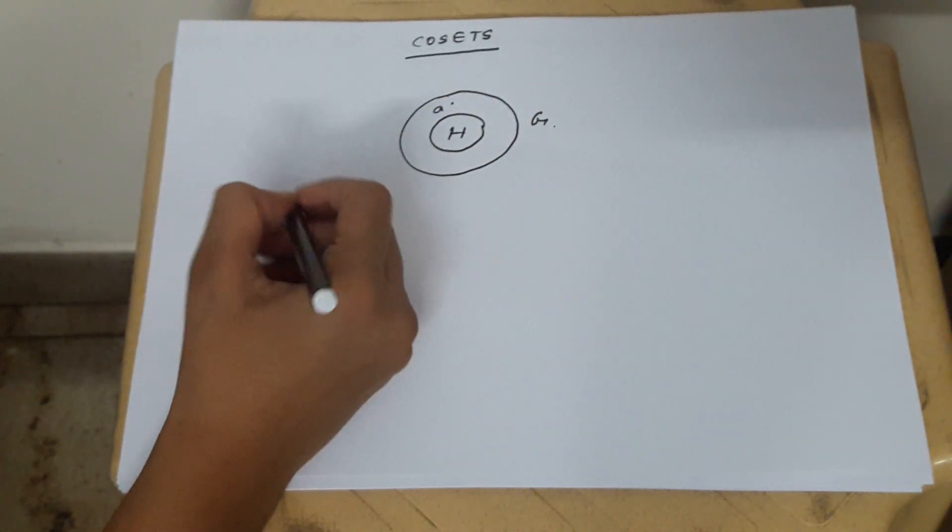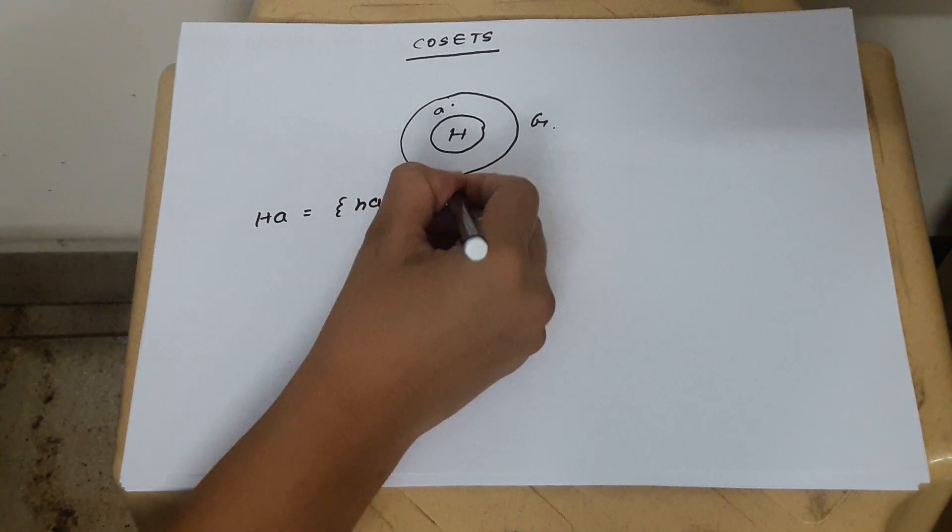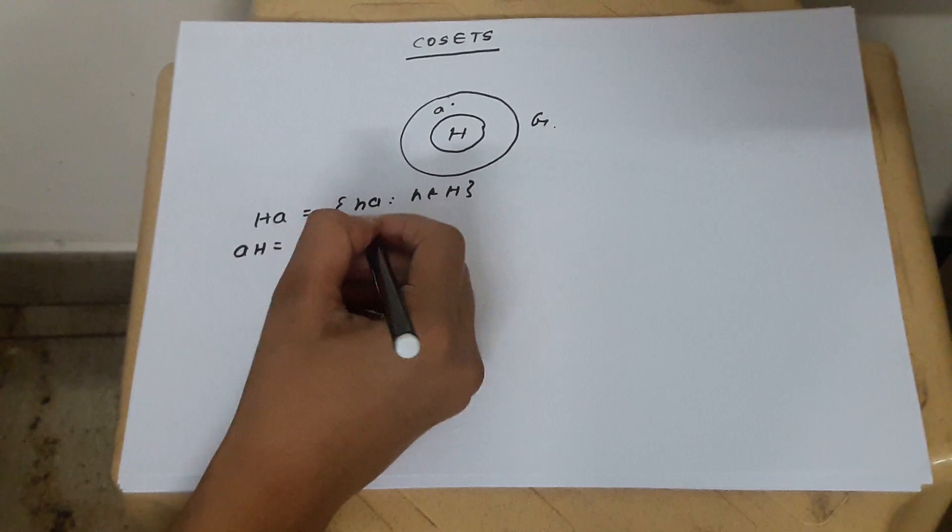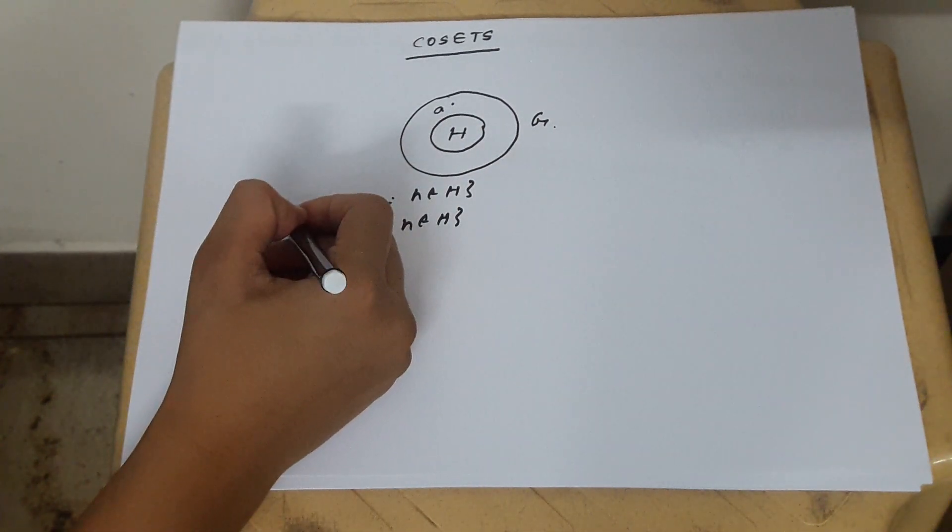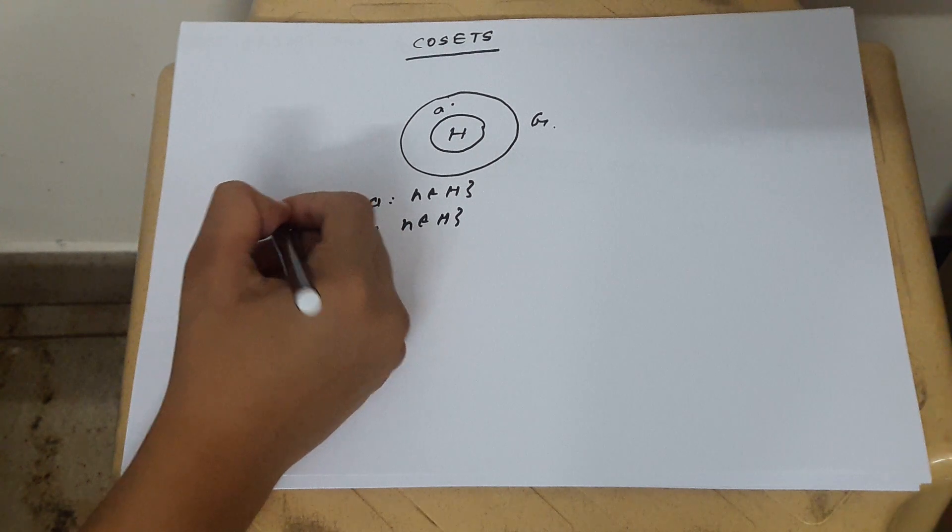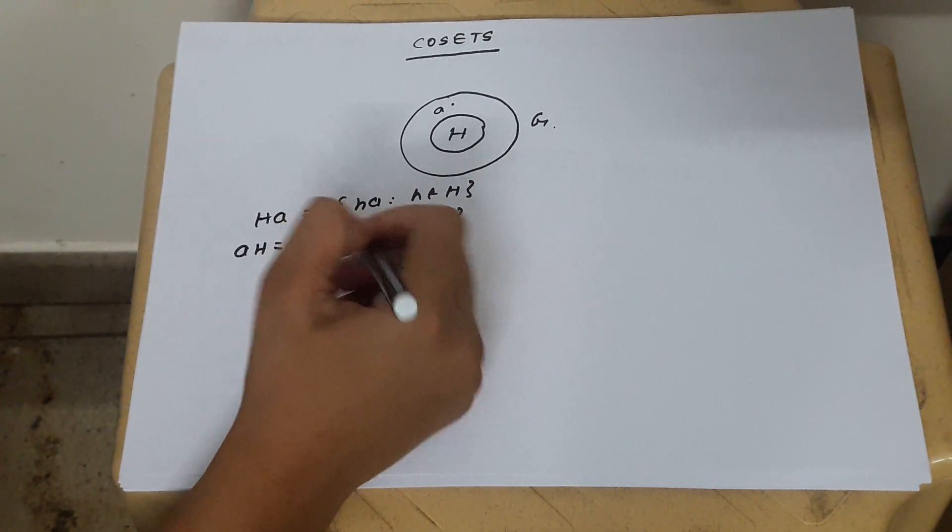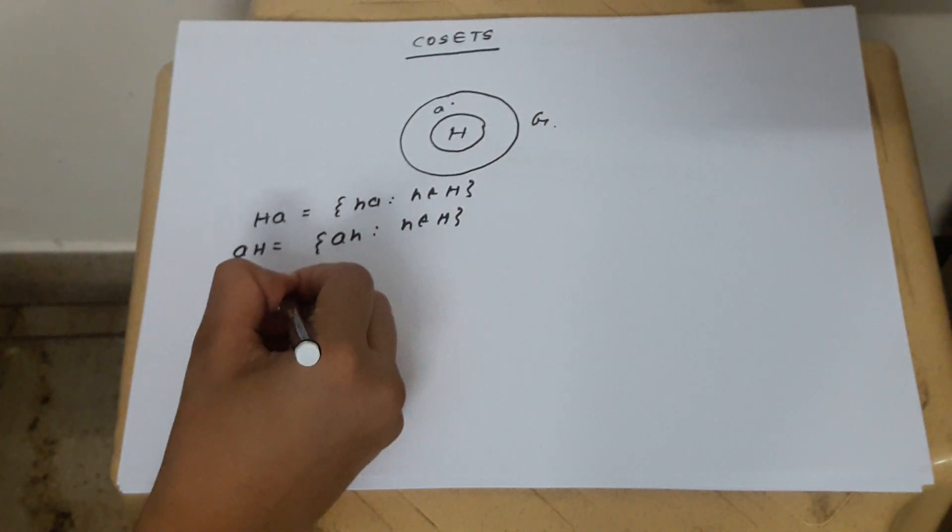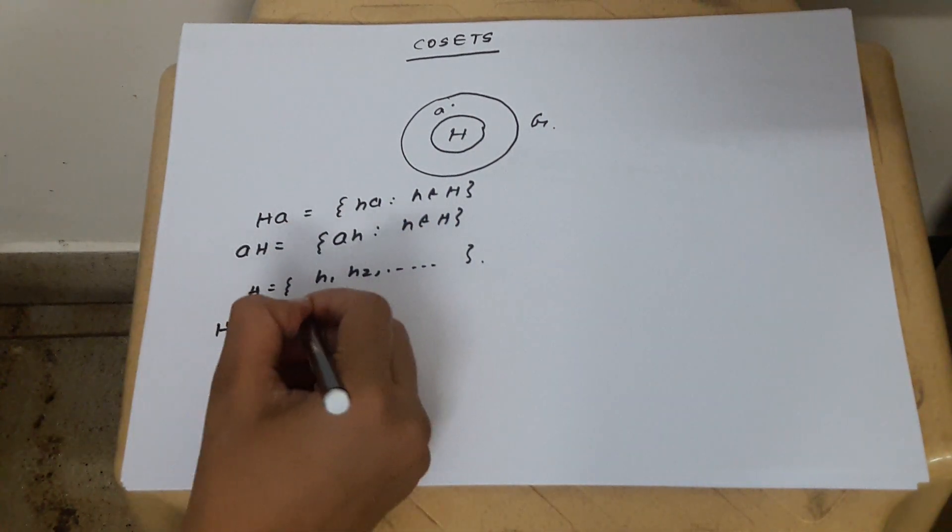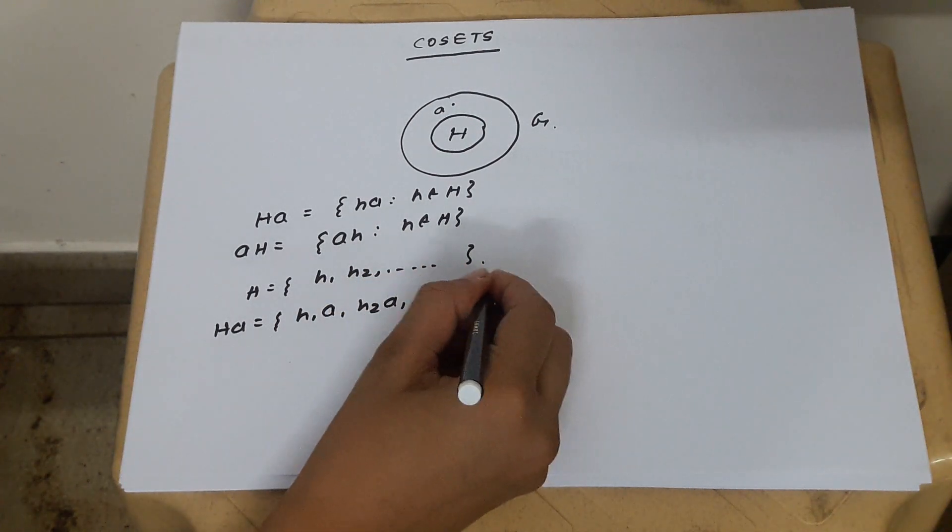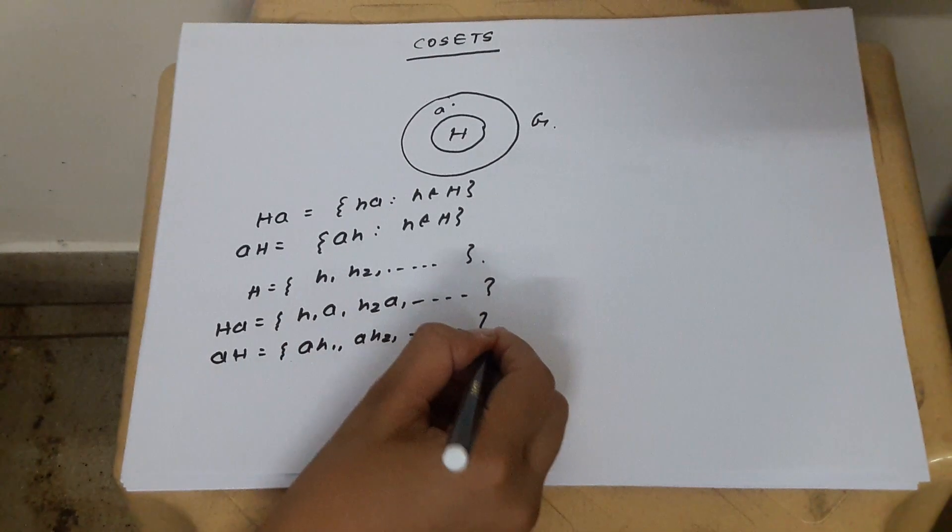See, H is a group and we define a set HA, which means elements of the type HA such that H belongs to H, and AH such that A is getting multiplied with H from left-hand side. Here, HA means element A is getting multiplied with H from right-hand side and AH means an element A is getting multiplied with H from left-hand side. Then, if you have, suppose H equals H1, H2 and so on, then HA equals H1A, H2A and so on, and AH equals AH1, AH2 and so on.